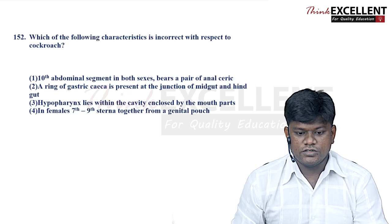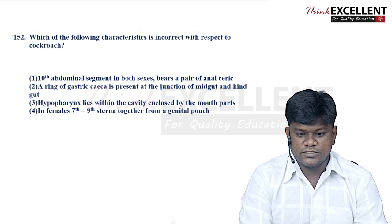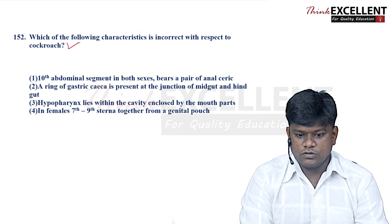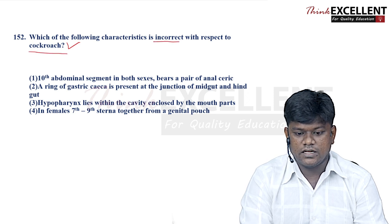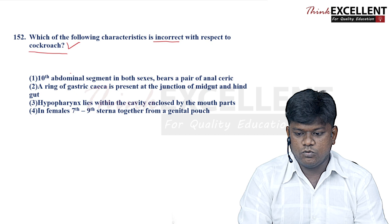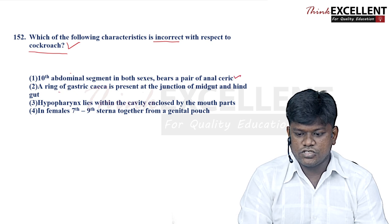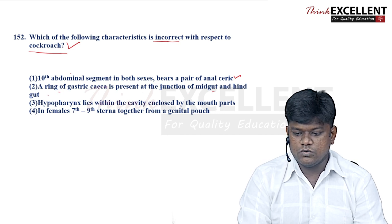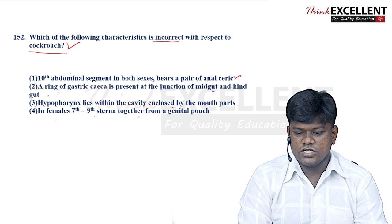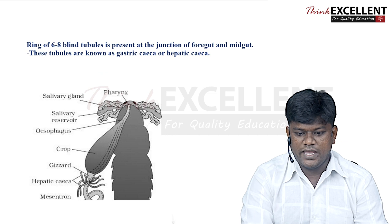Now we move on to question 152 — cockroach characteristics: which is incorrect? Option 1: the 10th abdominal segment is present in both sexes. Option 2: ring of gastric caeca is present at the junction of midgut and hindgut. Option 3: hypopharynx lies within the cavity enclosed by mouth parts. Option 4: in females, segments 7 to 9 form a genital pouch.